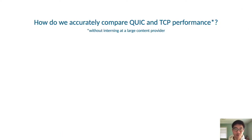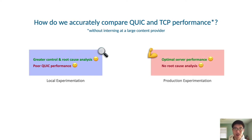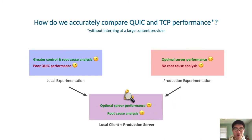Given the issues with existing research, how does one actually go about accurately comparing QUIC and TCP performance? While local experimentation offers greater control and root cause analysis, it's tough to tune a local QUIC server to be as performant as those hosted by large content providers. On the other hand, production experimentation offers optimal server performance but practically zero opportunities for analysis for those working outside these companies. As such, we address the problem by combining these two approaches — using local clients and production servers — allowing us to take advantage of the various optimizations made by content providers while also having access to client logs for root cause analysis.